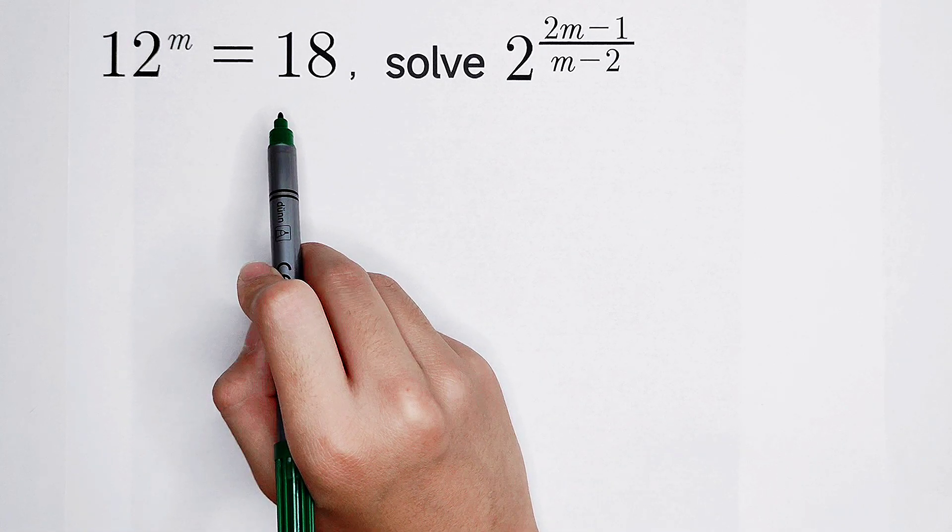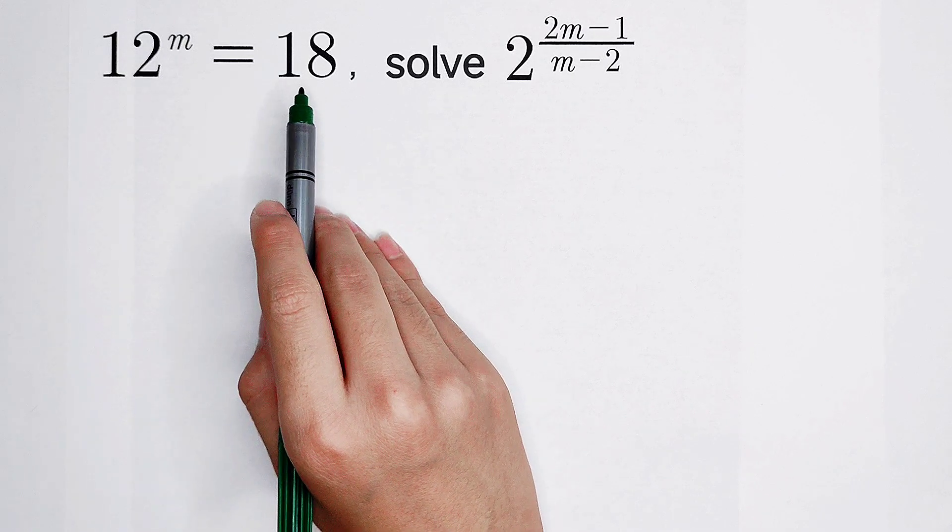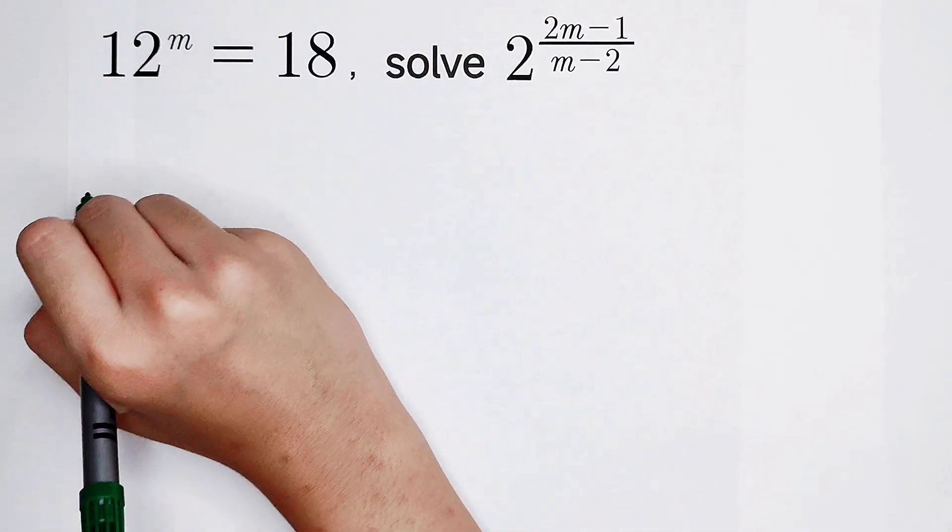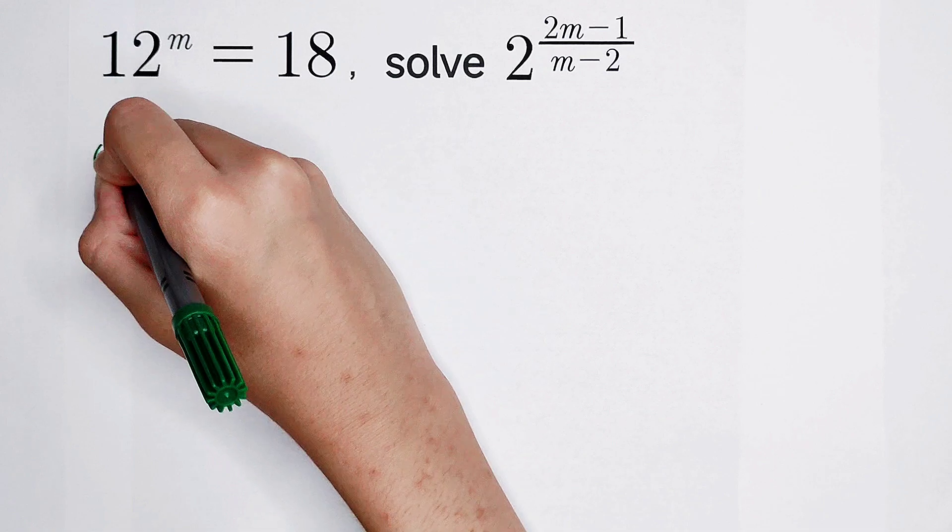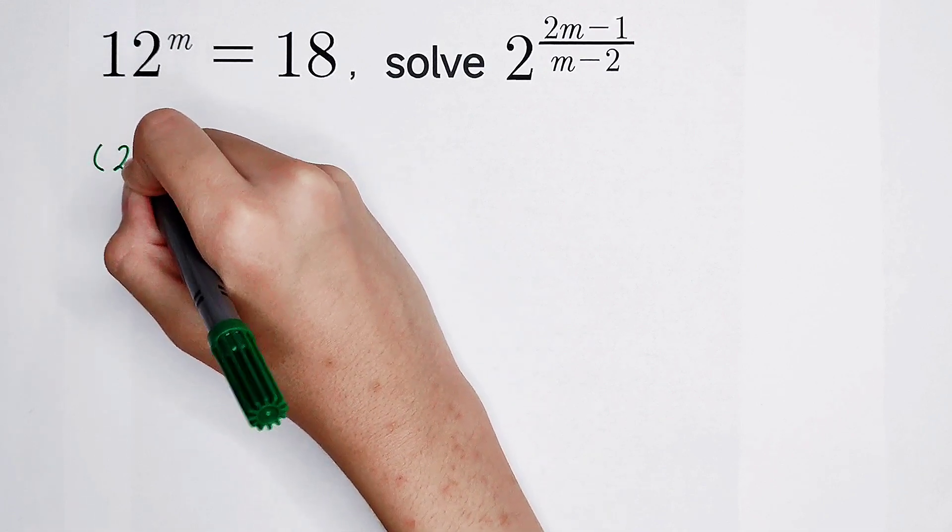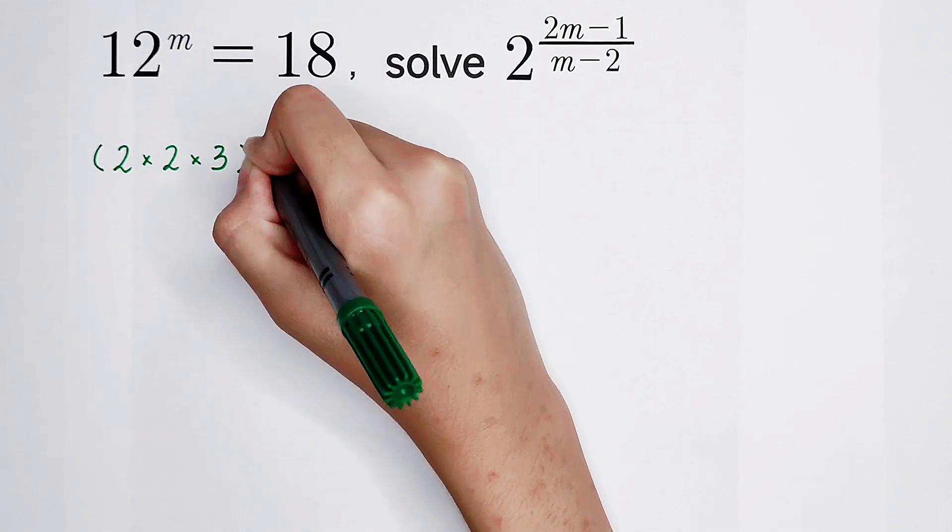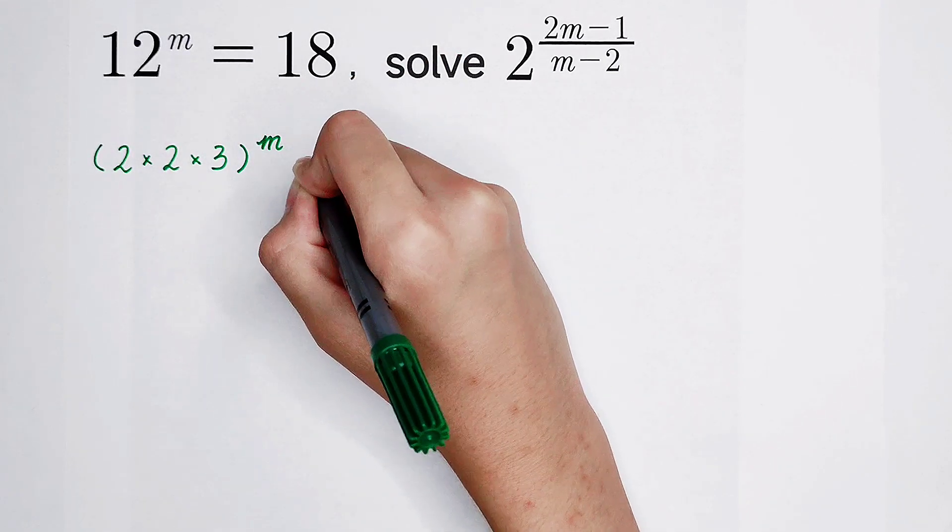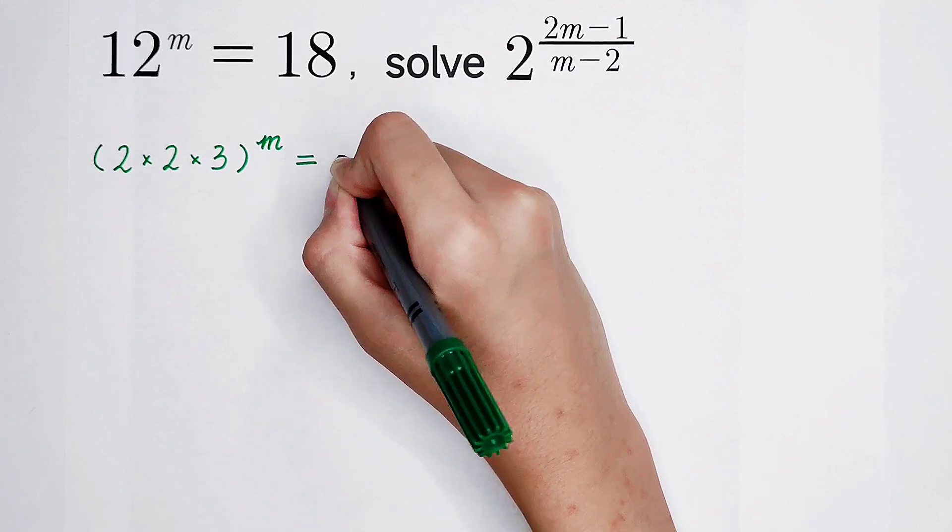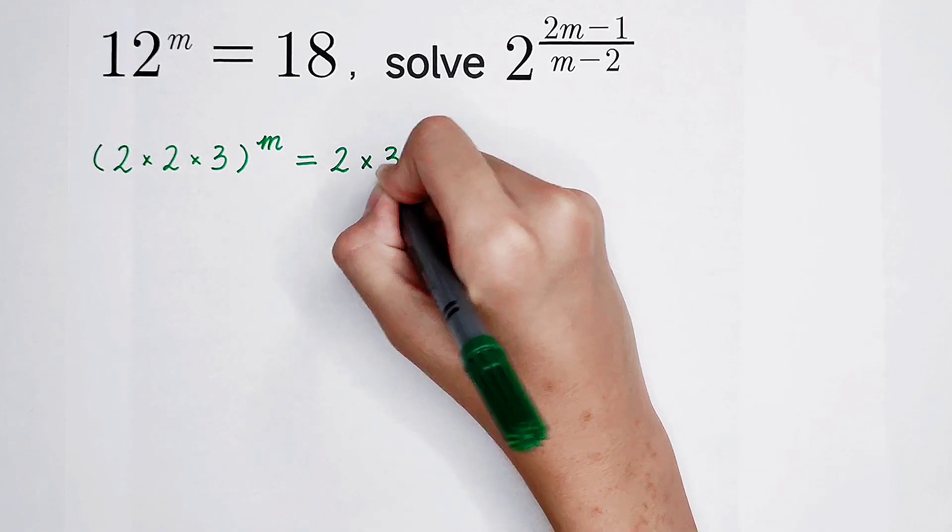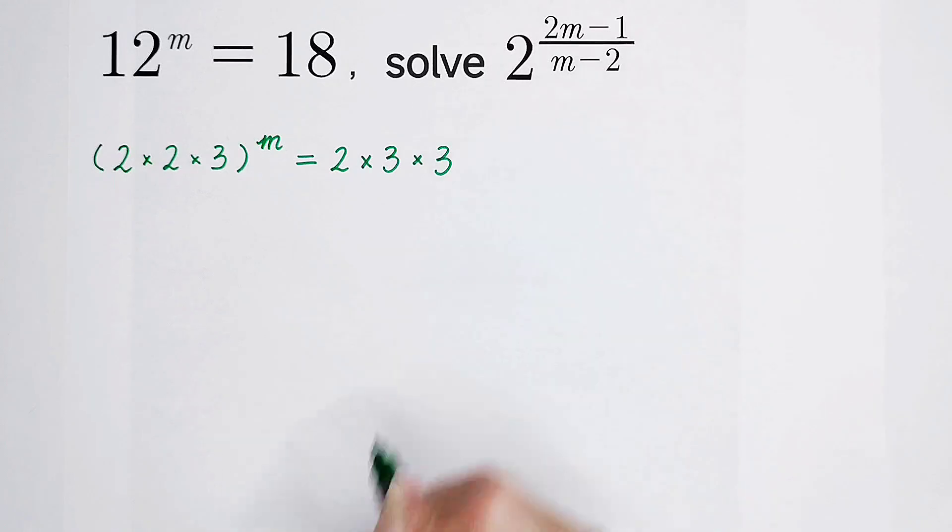12 can be viewed as 2 times 2 times 3, all to the power m. 18 is 2 times 3, then times 3.